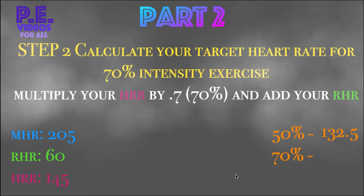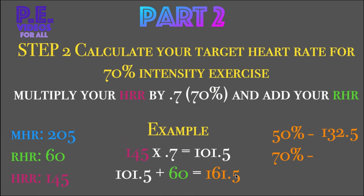Step two: calculate your target heart rate for 70% intensity exercise. To do this, you need to multiply your heart rate reserve by 0.7 and add your resting heart rate. Example: 145, that is your heart rate reserve, times 0.7 equals 101.5. And then, 101.5 plus 60, that is your resting heart rate, equals 161.5. So your 70% target heart rate is 161.5.